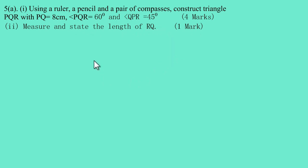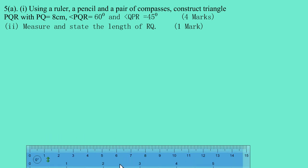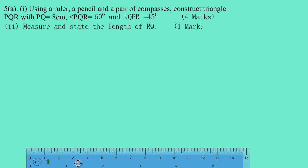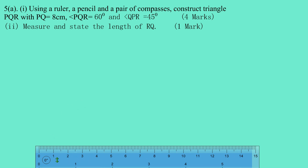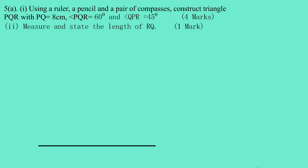Let me pull up my ruler. I'm going to use my pencil to draw a line segment representing PQ — the length should be 8 centimeters. I'll start at zero and go straight up to 8 cm. My ruler is in centimeters. Now let's label this line segment PQ.